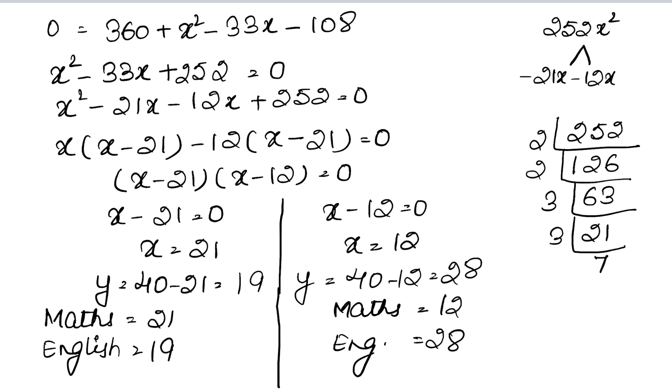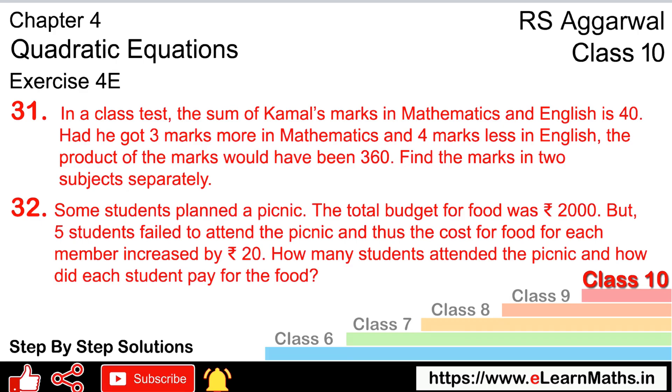Let's do the next question. Question number 32: Some students planned a picnic. The total budget for food was 2000 rupees. But 5 students failed to attend the picnic.